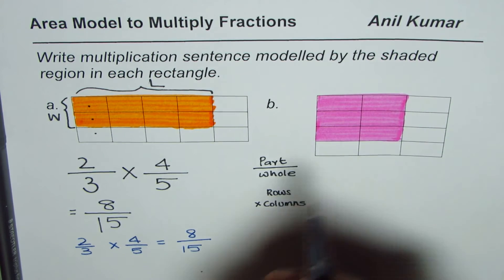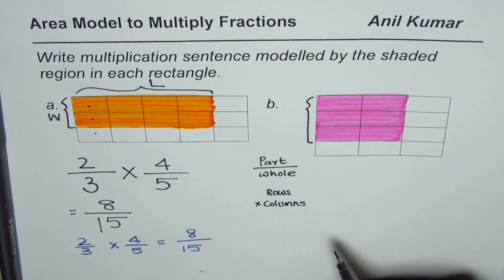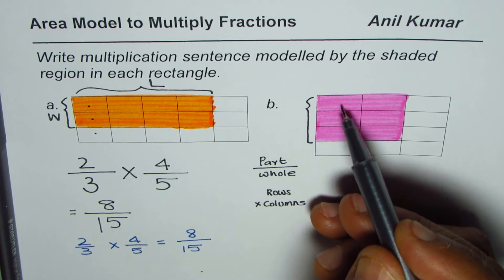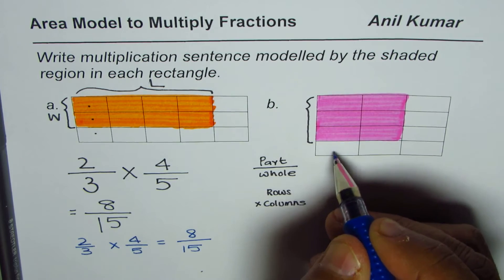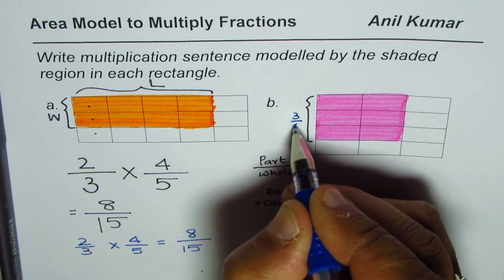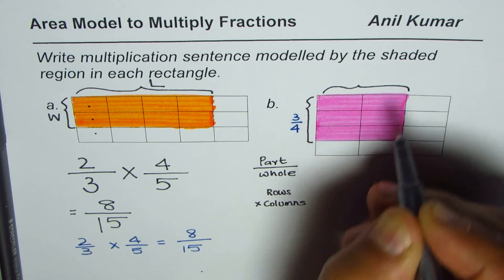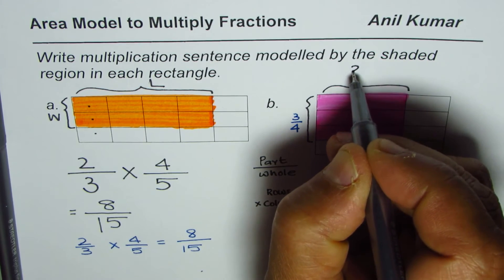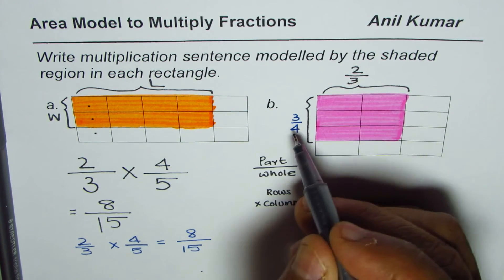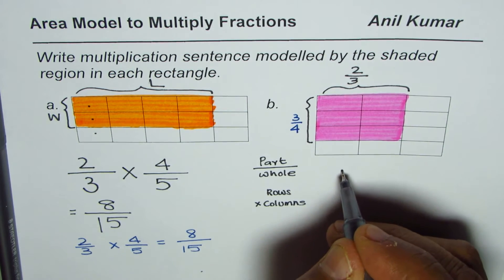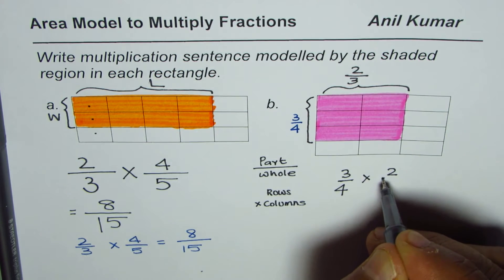You can now pause the video and find the multiplication sentence for the second rectangle. Let's quickly go through it. To find the width of the shaded portion as a fraction — part over whole — we count: 3 out of 4. So the width is 3/4. The length is 2 out of 3, so that is 2/3.